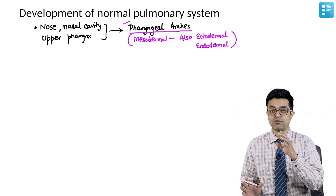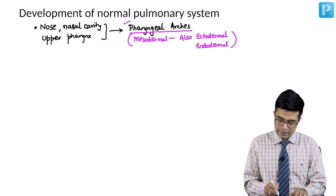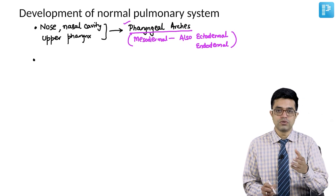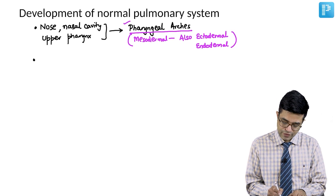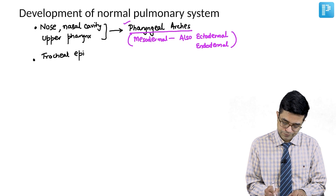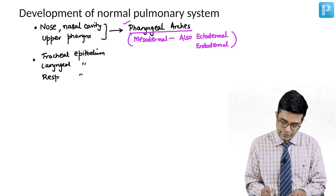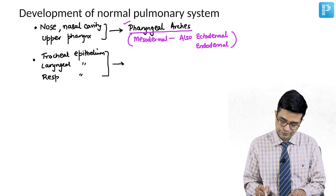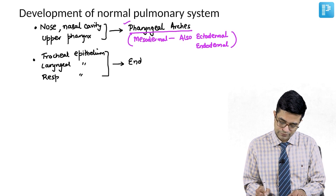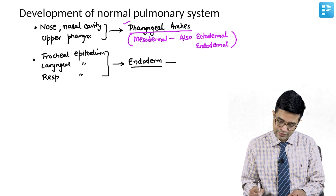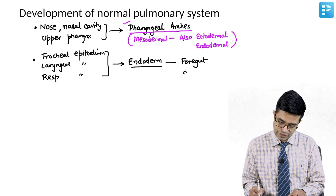Pharyngeal arch derivatives form the upper part of your respiratory tract. For the lower part — the lower zones — ranging from the tracheal epithelium, the laryngeal epithelium, as well as the remaining respiratory epithelium, it all arises from endoderm and is a foregut derivative.